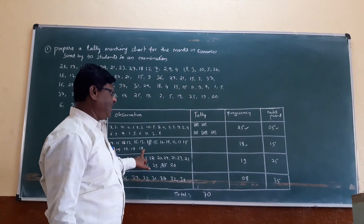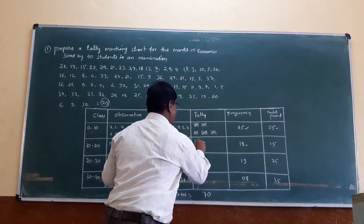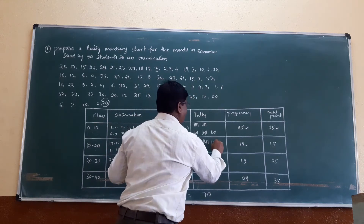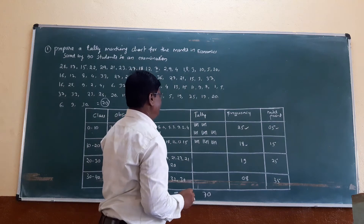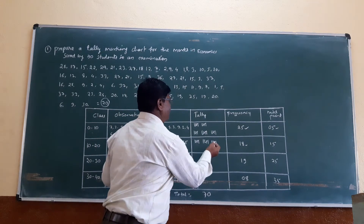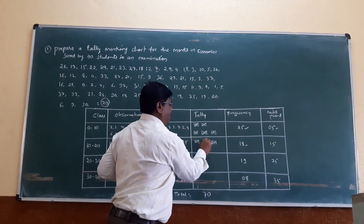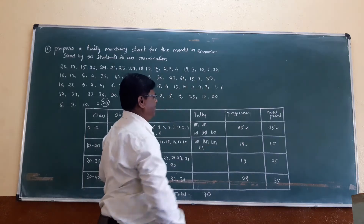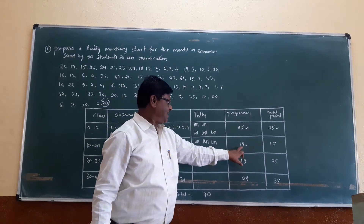To tally 18: mark groups of 5 — 5, 10, 15, then 3 more: 15 plus 3 equals 18. It is the frequency for class 10 to 20.